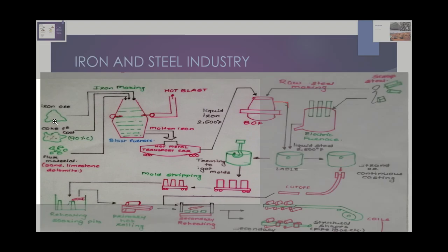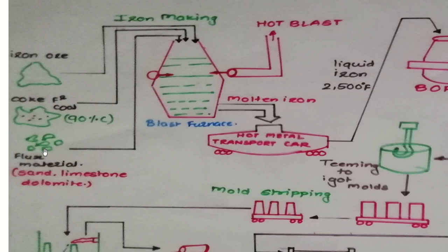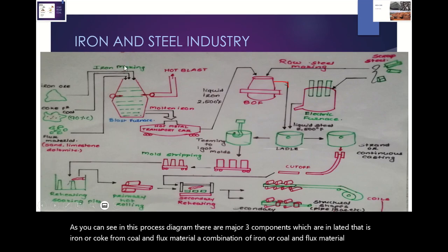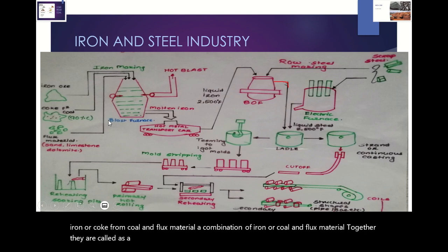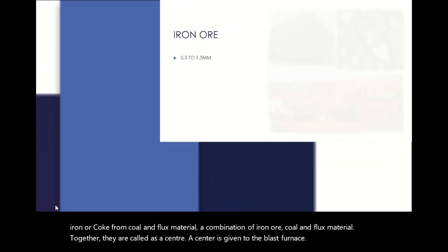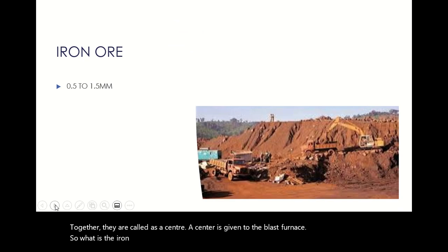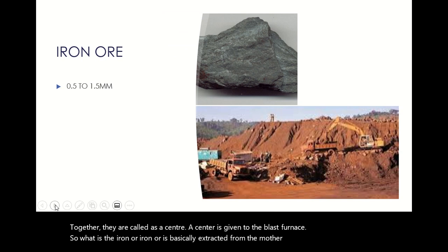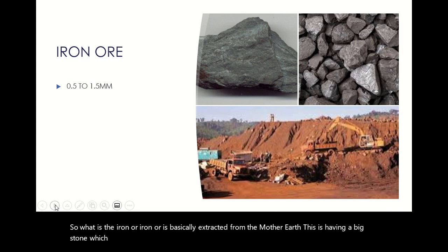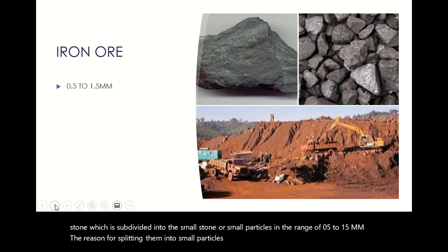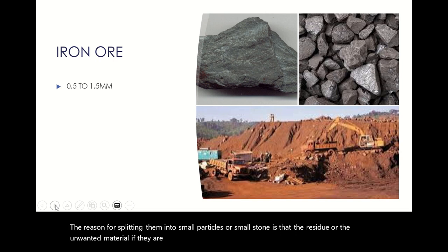As you can see in this process diagram, there are three major input materials: iron ore, coke from coal, and a flux material. A combination of iron ore, coal, and flux material together is called a sinter. This sinter is given to the blast furnace. Iron ore is basically extracted from the earth — it is a big stone subdivided into small particles in the range of 0.5 to 1.5 mm, so that unwanted material associated with it can be removed easily.